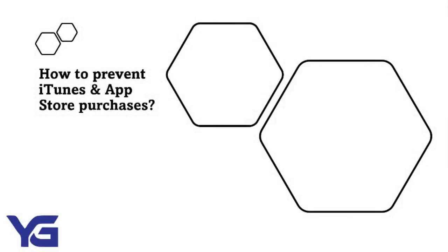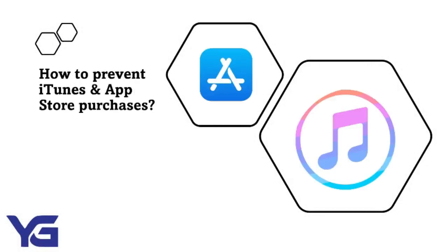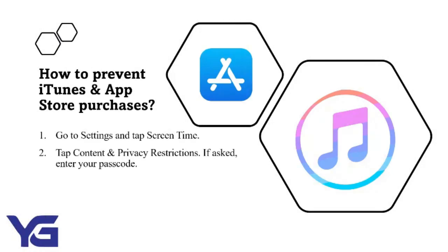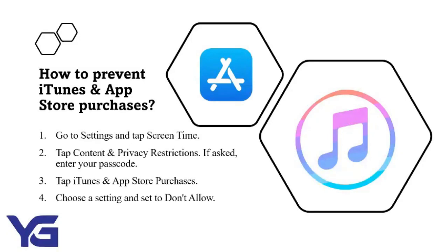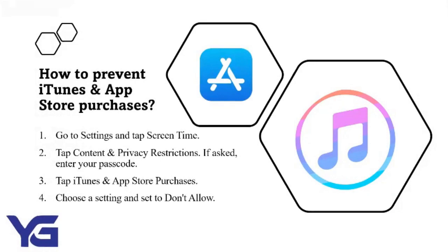How do we set iTunes and App Stores for making any purchase? Step 1: Go to Settings and tap Screen Time. Step 2: Tap Content and Privacy Restrictions. If asked, enter your passcode. Step 3: Tap iTunes and App Store Purchases. Step 4: Choose a setting and set to Don't Allow. And it is done.